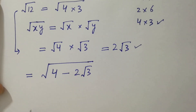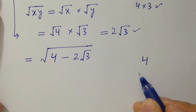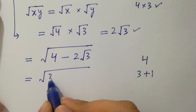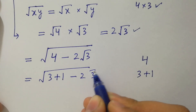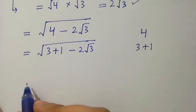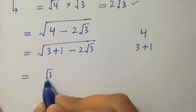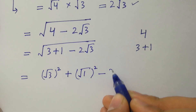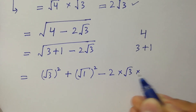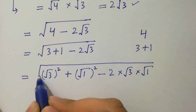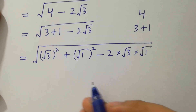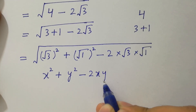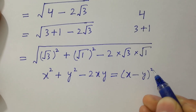Here, 4 equals 3 plus 1, so it becomes the whole square root of (3 + 1) minus 2·√3. This matches the formula x² + y² − 2xy = (x − y)², where x = √3 and y = √1. Apply this formula.